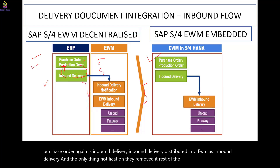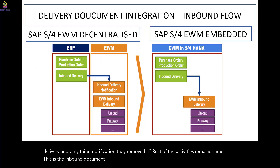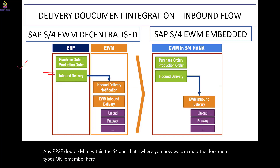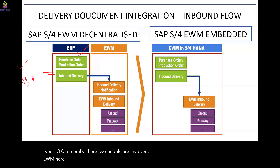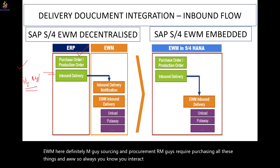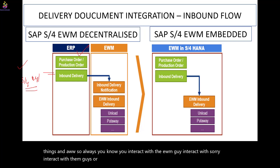This is the inbound document flow — how you link the inbound delivery in ERP to WMS, or within S4, and how you map the document types. Two teams are involved here: the WMS team and the MM or sourcing and procurement team. You always interact with the MM or sourcing and procurement guys to fulfill all end-to-end scenarios.